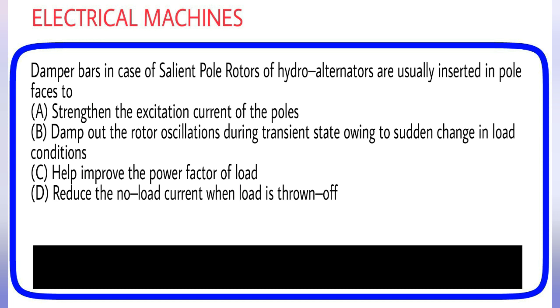Damper bars in case of salient pole rotors of hydro alternators are usually inserted in pole faces to: (A) Strengthen the excitation current of the poles, (B) Damp out the rotor oscillations during transient state owing to sudden change in load conditions, (C) Help improve the power factor of load, (D) Reduce the no-load current when load is thrown off. Answer is option B, damp out the rotor oscillations during transient state owing to sudden change in load conditions.